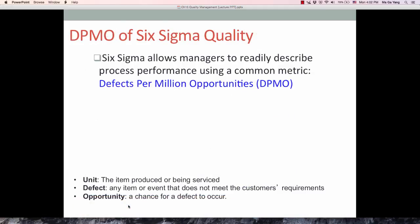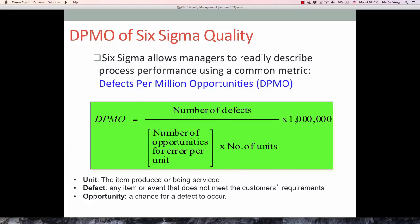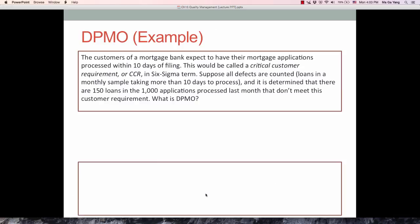One way to measure Six Sigma quality is using DPMO. As I said, DPMO is defect per million opportunities: the number of defects divided by number of opportunities for error per unit times the number of units. Usually, number of units equals 1, so you don't have to consider that, times one million. The unit is the item produced or being serviced, so it can be applied to both manufacturing and service industries. Defect is any item or event that does not meet customer requirements, because Six Sigma is all about meeting customer requirements. And opportunity is the chance for a defect to occur. Having said this concept, let's go through the problems.